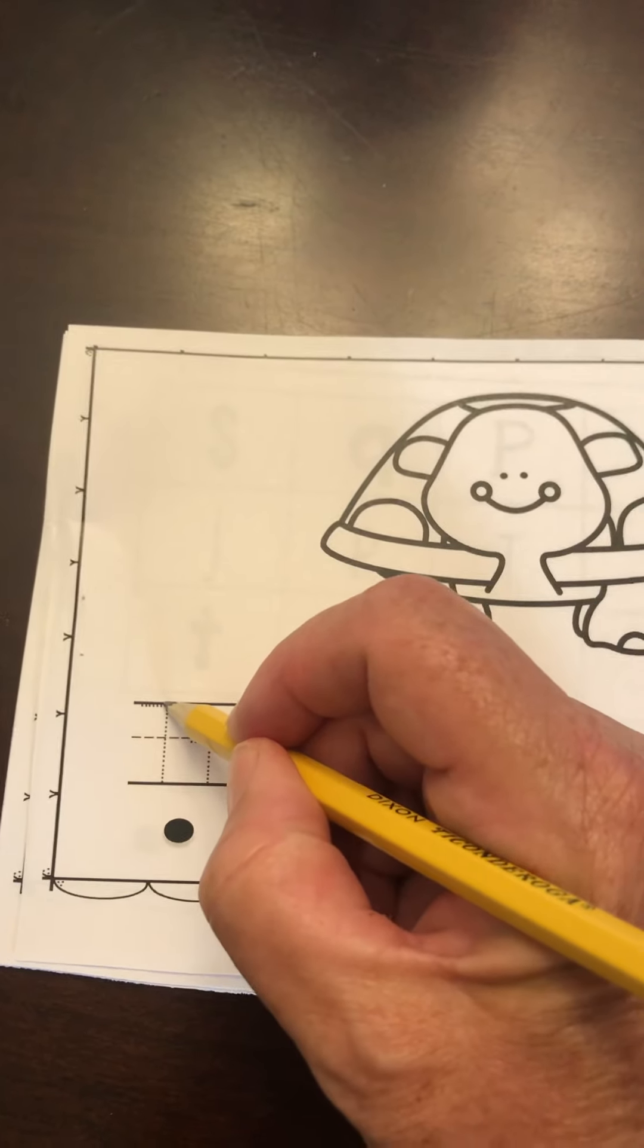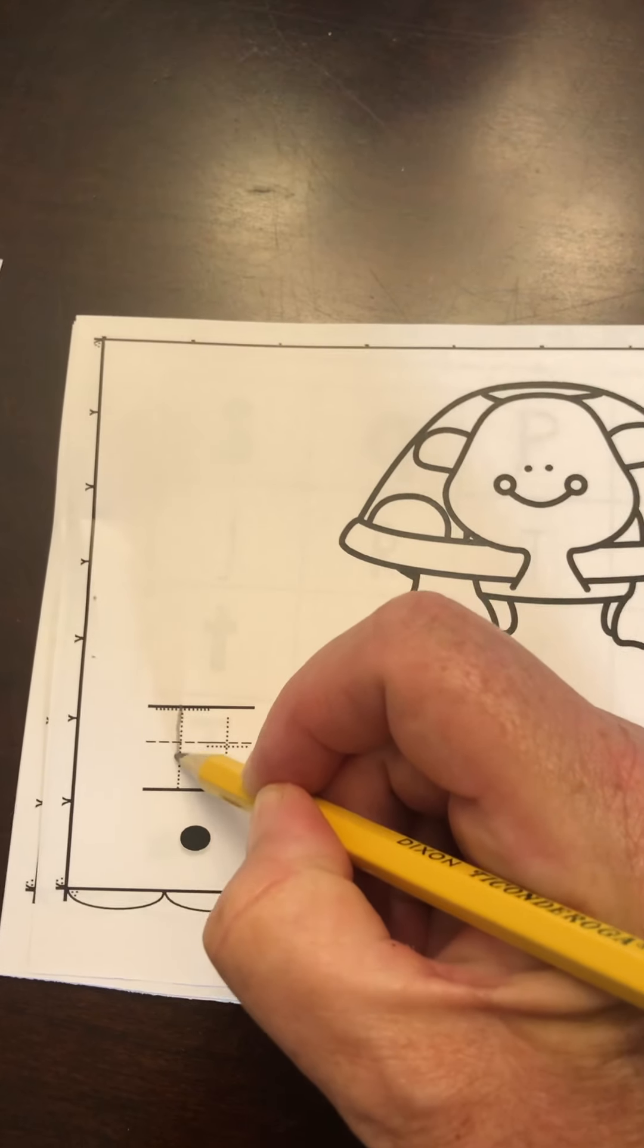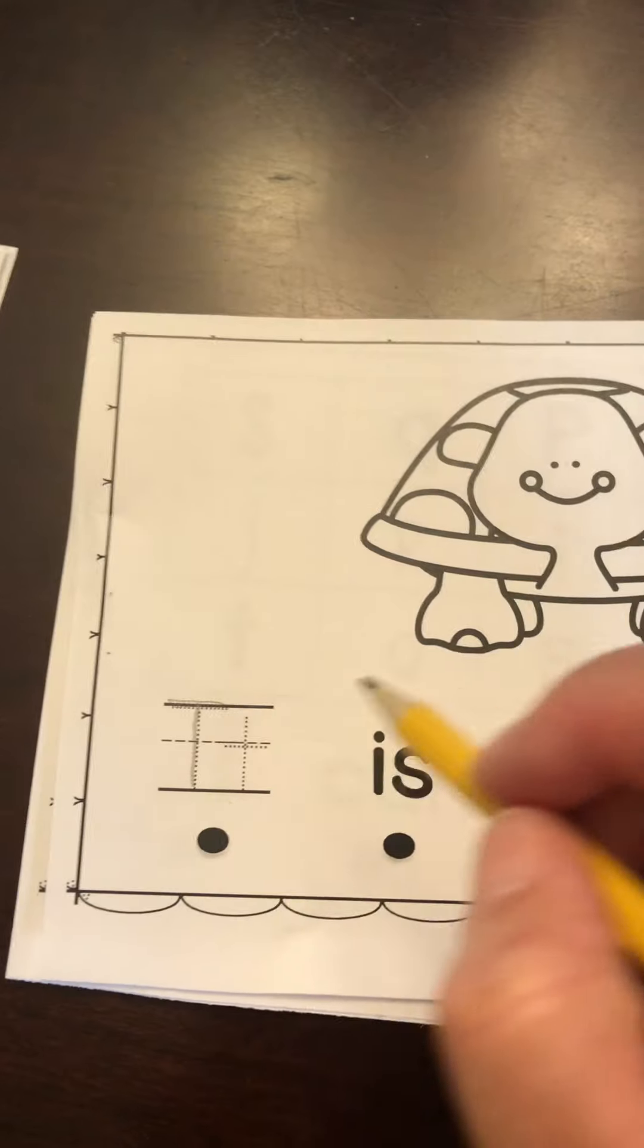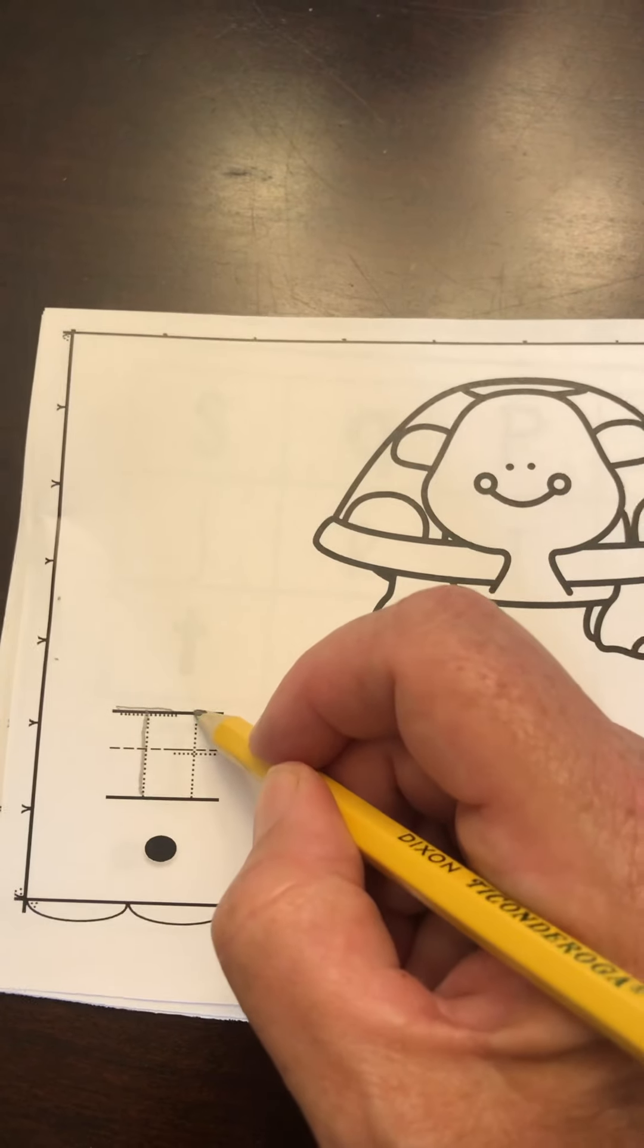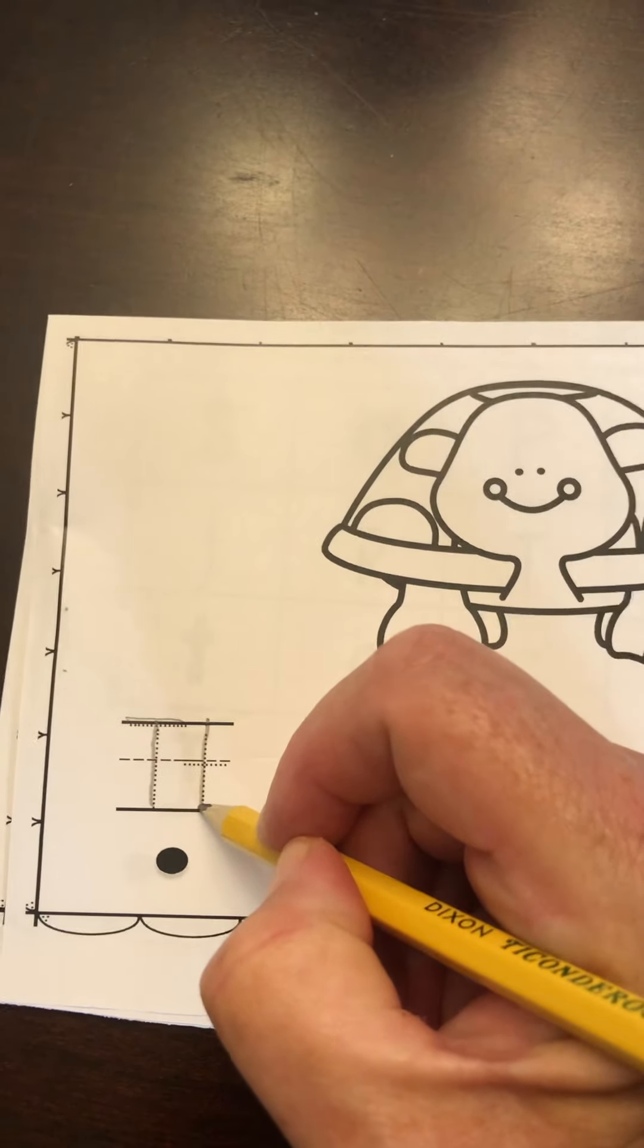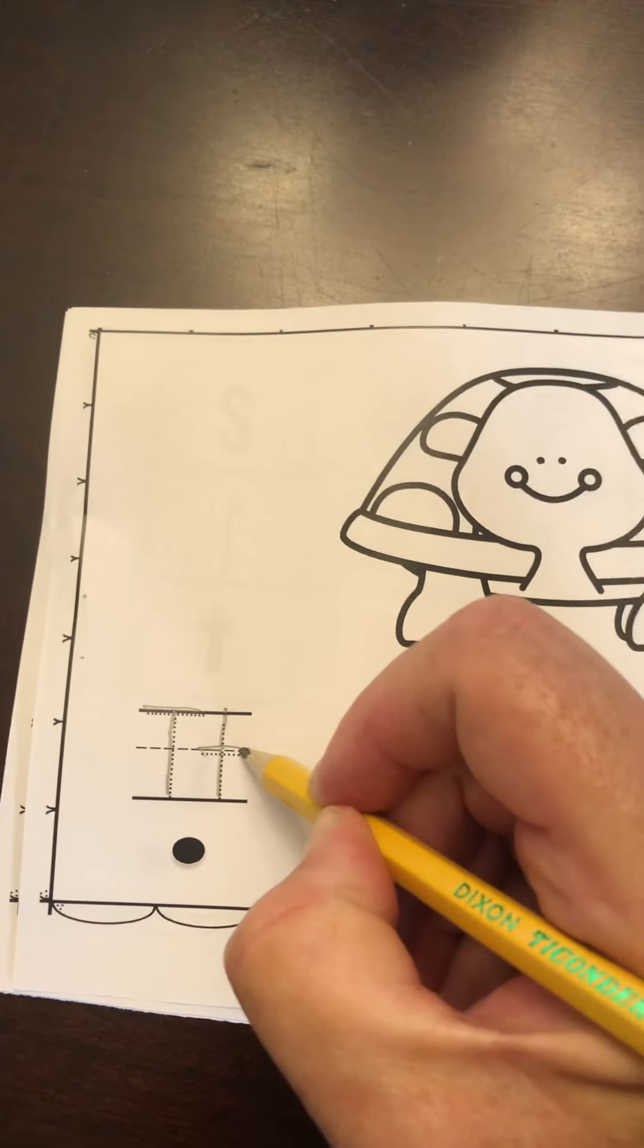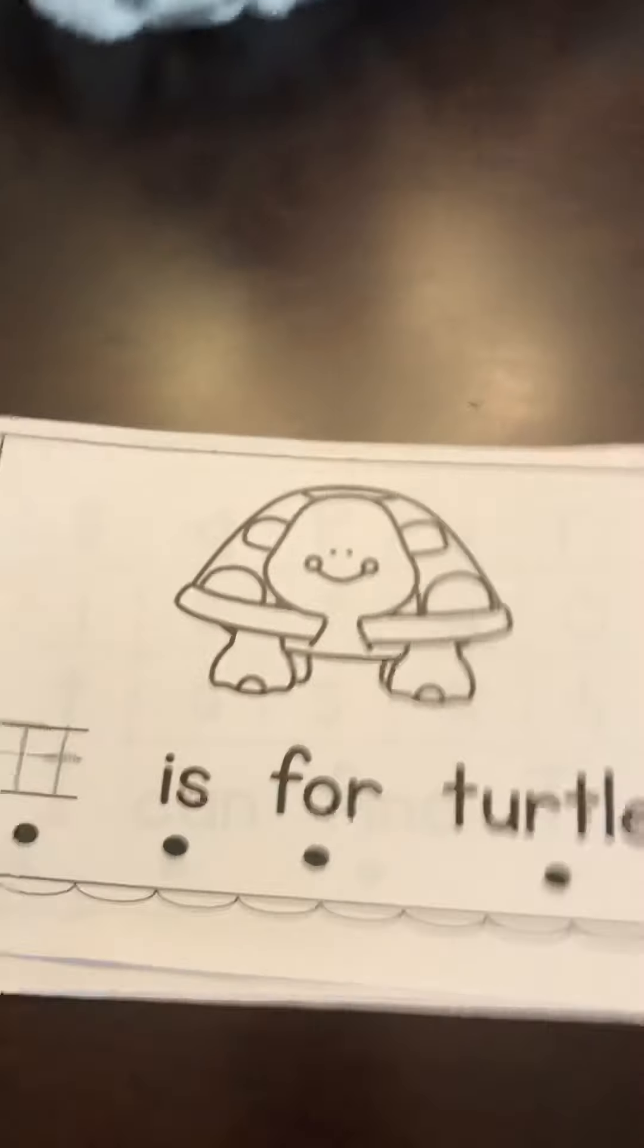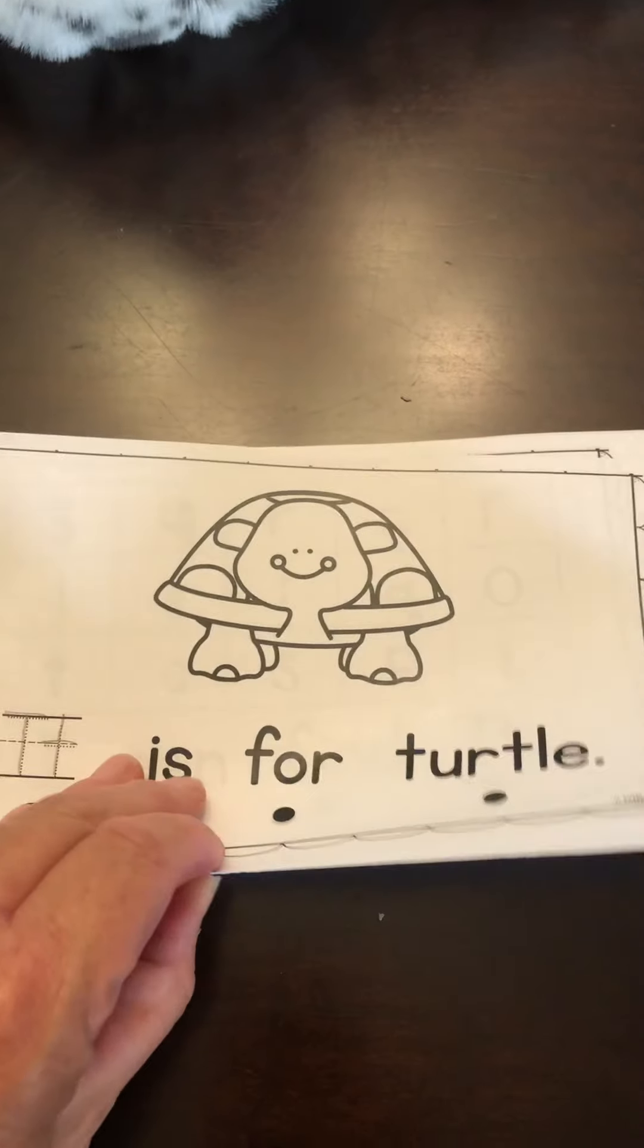Now we're going to start on the skyline, go down to the grass line, cross on the skyline. T, turtle. Turtle starts with the letter T.